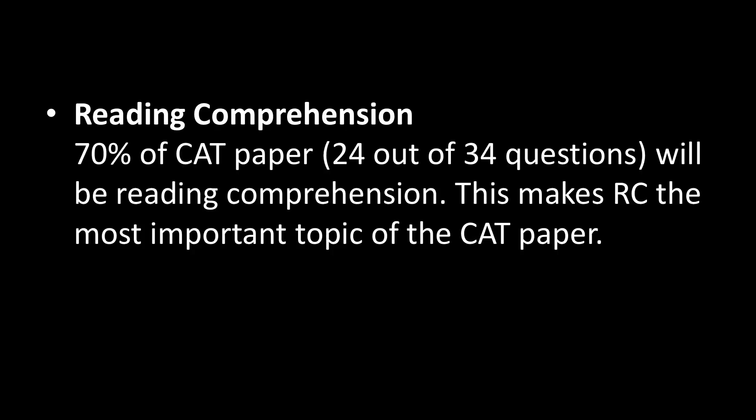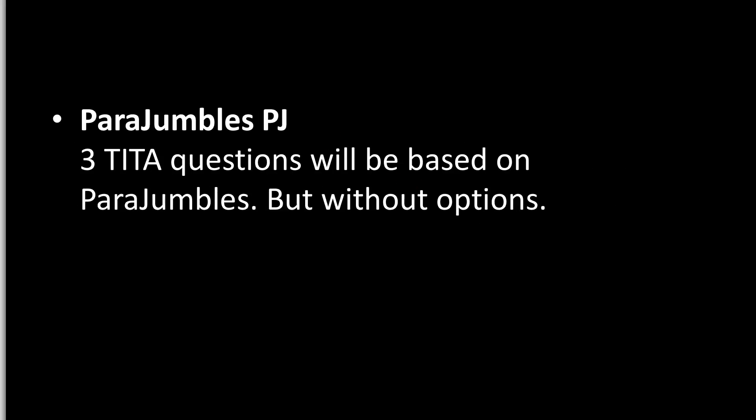What is included in the verbal section: RC makes up 70% of the CAT paper — that is 24 out of 34 questions are going to be based on RC. So if you don't have good comprehending skills it will be very difficult to crack CAT. Reading comprehension is the first thing you'll encounter.